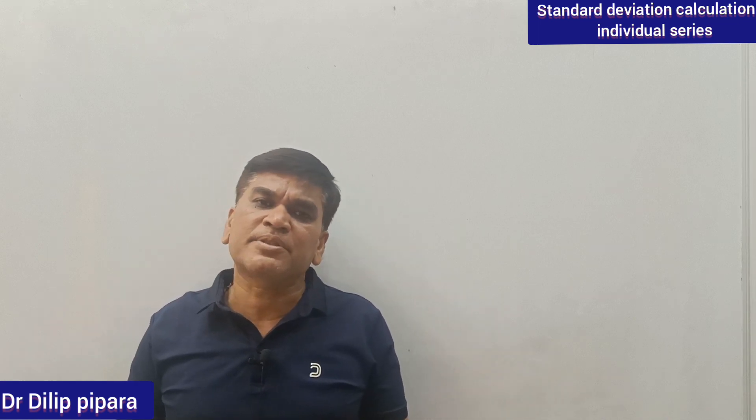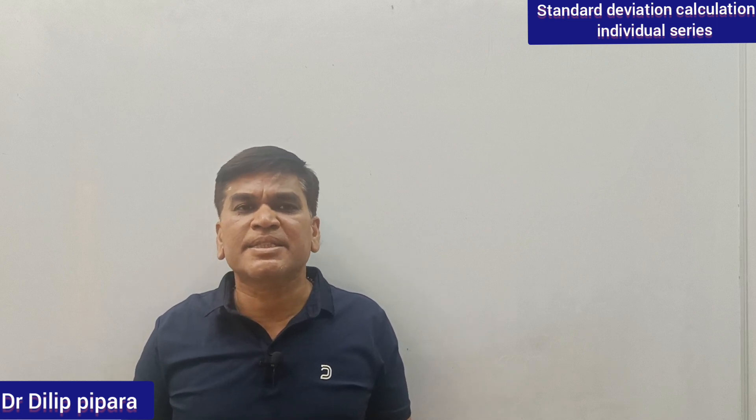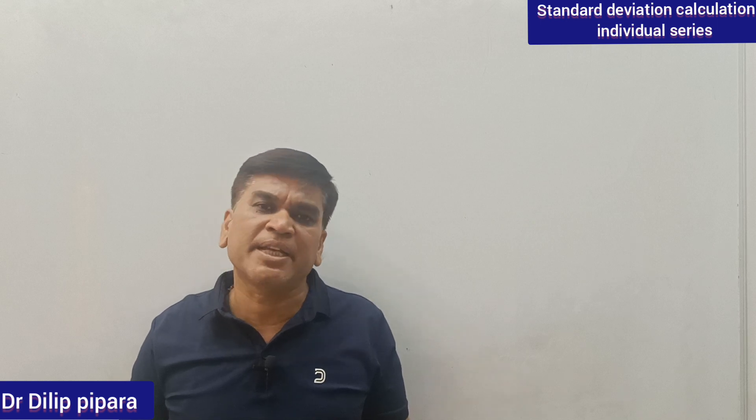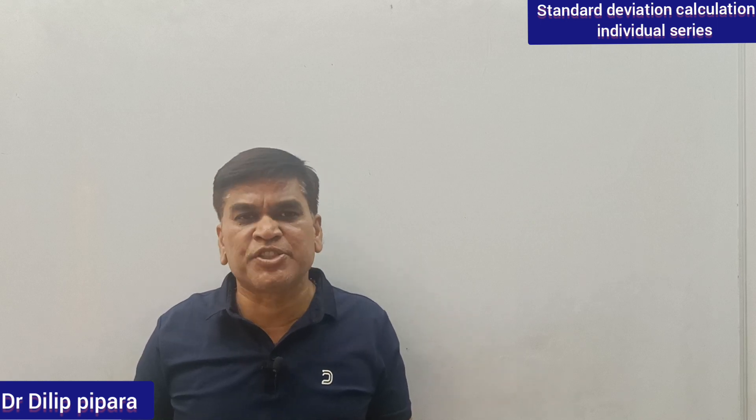In the previous video from the dispersion chapter, we discussed what is standard deviation and how to calculate it. Standard deviation is the ideal measure of dispersion because it has some characteristics. In today's video, we will discuss how to calculate standard deviation in the case of individual series with the direct method as well as the assumed mean method.